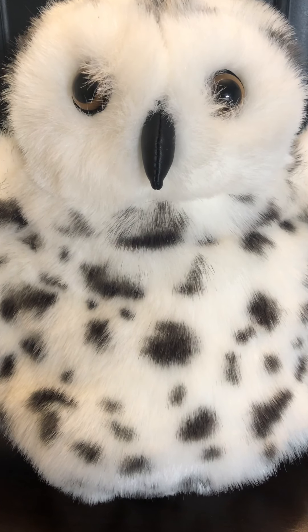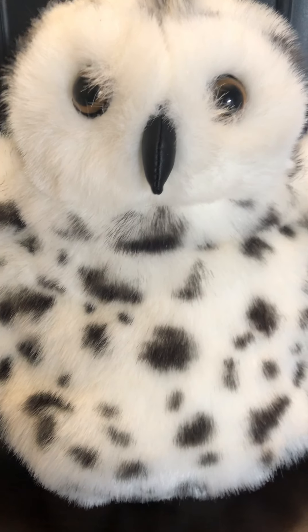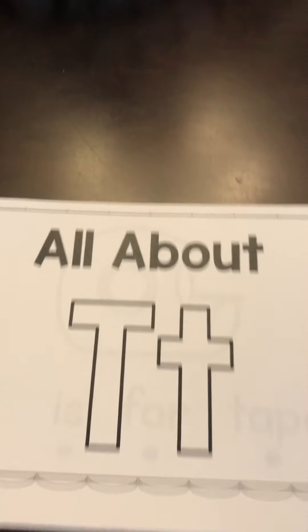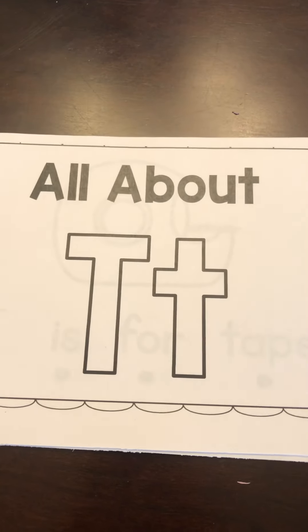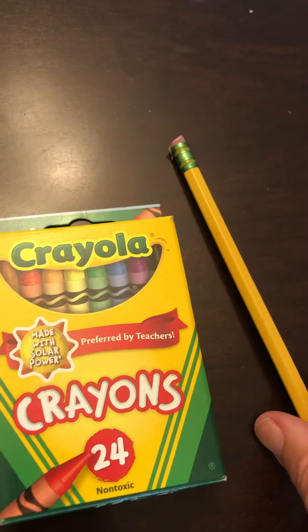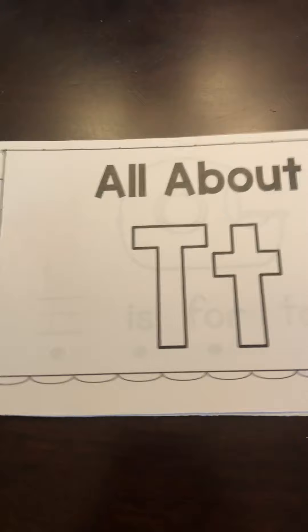Hello my kindergarten friends. Today I have Echo the Owl and Echo the Owl is going to help us do the All About T book. You're going to need All About T books, some crayons, and a pencil.